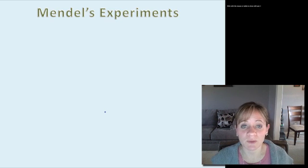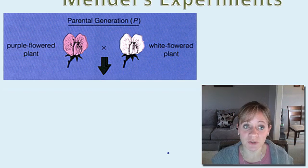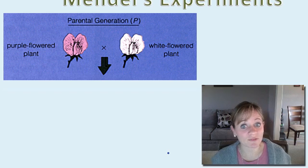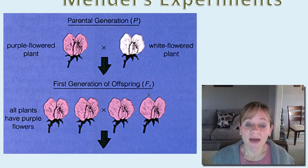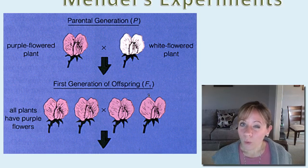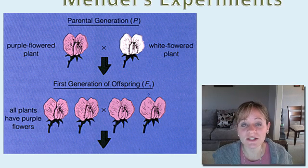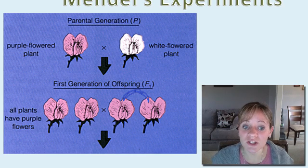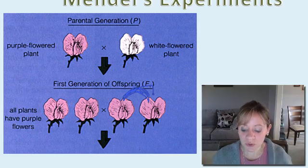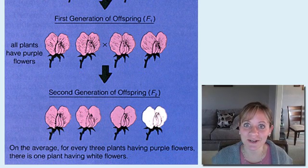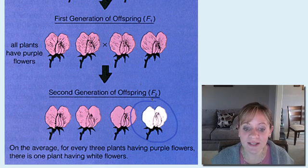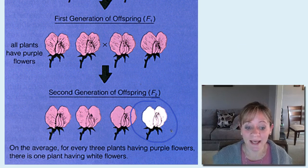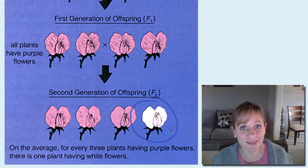Let's take a look at what Mendel actually did — his experiments step by step. In the first generation, which he called the parental generation, he took a purple flower plant and a white flower plant, mated them, and saw what the offspring looked like. He found that the first generation, the F1, was all purple flowers, so he thought: where did that white color go? Then he self-fertilized — he took these two purple flowers and mated them to get an F2 generation. Much to his surprise, in 1850, he saw a white flower come out in that second generation.